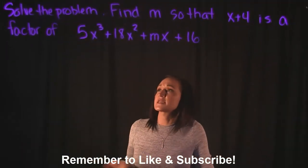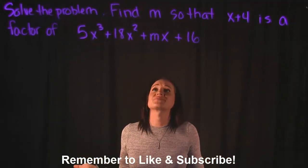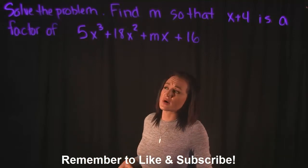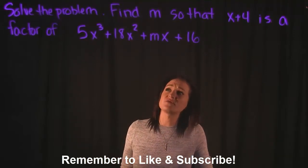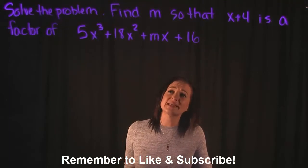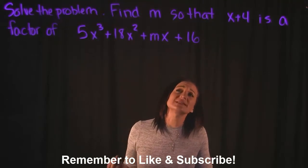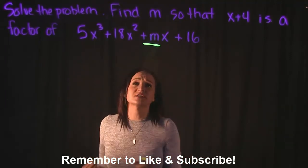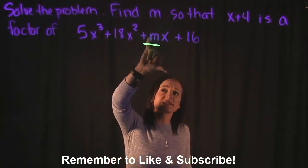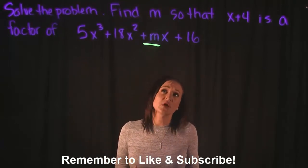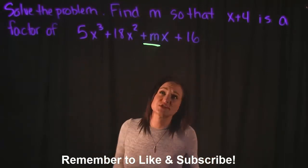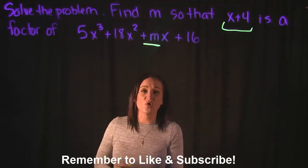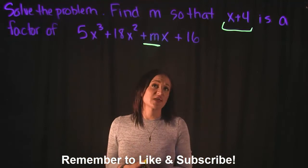So for this problem, it's asking us to solve: find m so that x plus 4 is a factor of 5x cubed plus 18x squared plus mx plus 16. So they want us to figure out what this m is equal to — what the coefficient of x to the first power is equal to — given that x plus 4 is a factor of this.